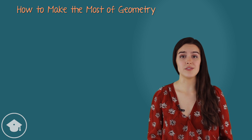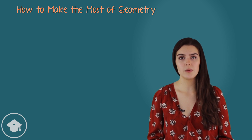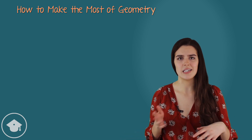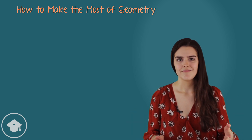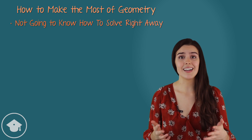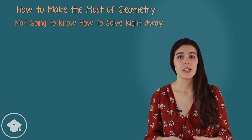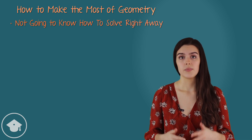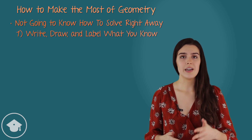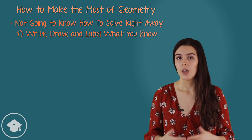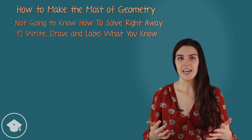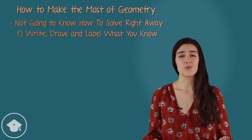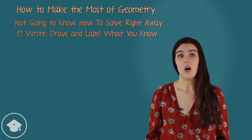On most geometry problems, we aren't going to look at the problem and immediately know the full solution path. For the most part, we're not going to know exactly how to solve until we're pretty close to the answer. This means we need to be smart about how we approach the question. First, write or draw what you know. If you get a diagram, draw it on your own paper. If you don't get a diagram, make one. Then, once you have your diagram, label everything you know from the question. Doing these problems in your head is a great way to get lost and overwhelmed — make your life easier by putting it on paper.